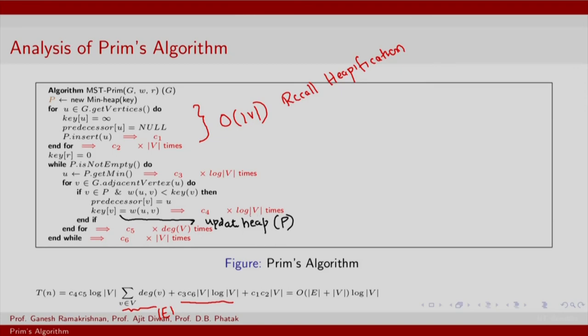This will take order log v time, and remember all this happens for time proportional to the sum of the length of all the adjacency lists. That gives you c4 times c5 times log v multiplied by summation over all vertices of the degree of that vertex. This is nothing but order of E times log v plus order of V times log v. Thank you.